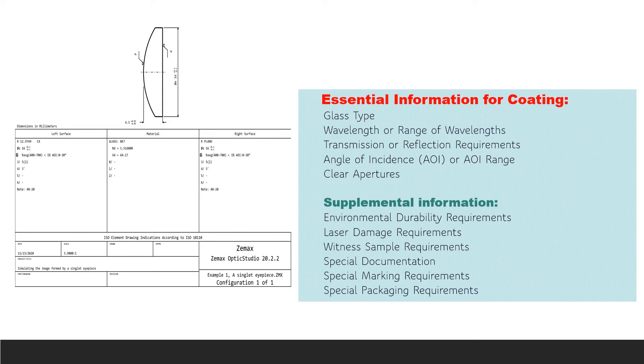Let us look at the things that we need to know. The essential information would be the glass type, the wavelength or range of wavelengths of interest, transmission or reflection requirements, angle of incidence or the angle of incidence range, and with that also comes polarization requirements, clear apertures.